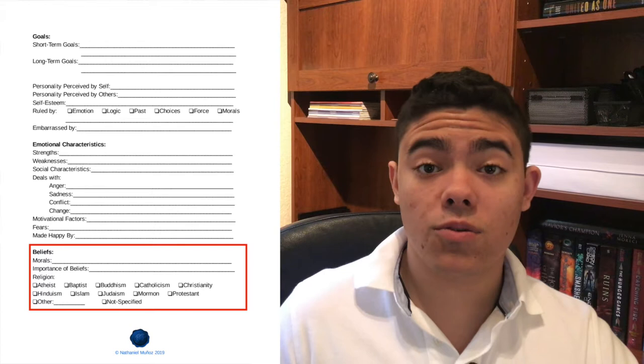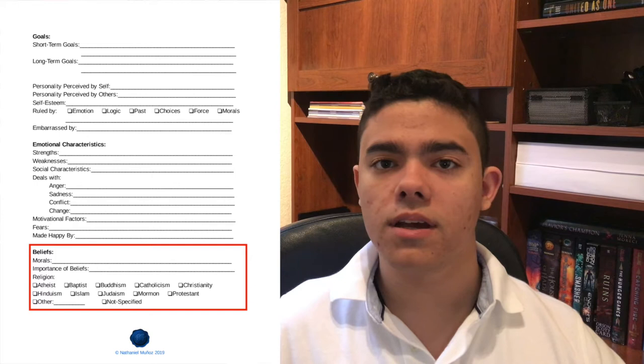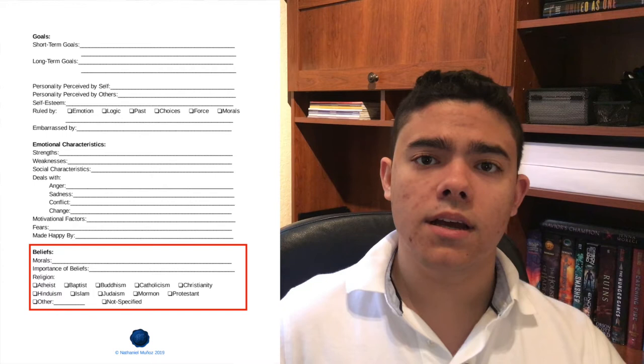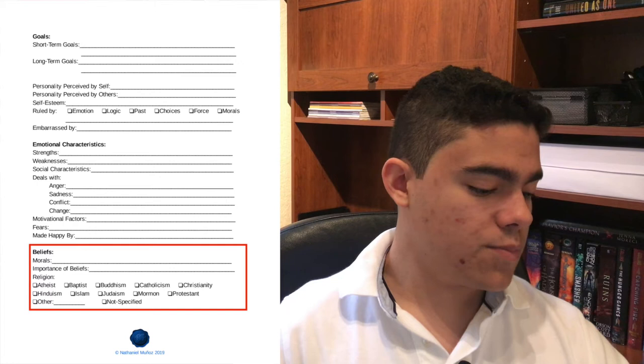Following this, I have a section where you can write their religion because ultimately what they believe in and what their religion is might further affect how they deal with things and how they react to scenes in your novel. So I put them all here alphabetically. I also put an other section at the end so that if the religion or faith that your character believes in or practices is not directly expressed, you could write that in. So you have atheist, Baptist, Buddhist, Catholic, Christian, Hindu, Islam, Judaism, Mormon, Protestant, other, and not specified.